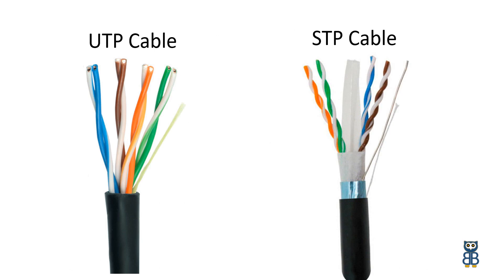The most common difference between unshielded twisted pair and shielded twisted pair cable types can be recognized in the picture. In the unshielded twisted pair, or UTP cable, all pairs are wrapped in a single plastic sheath. In the shielded twisted pair, or STP cable, each pair is wrapped with an additional metal shield, then all pairs are wrapped in a single outer plastic sheath.